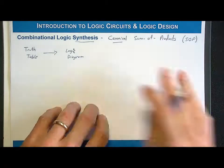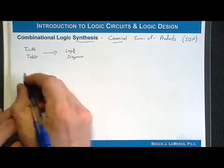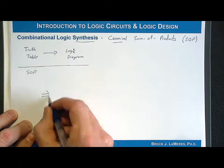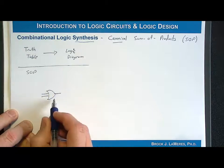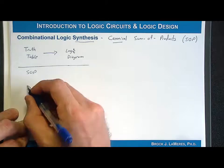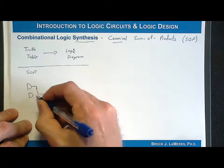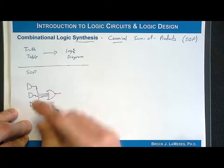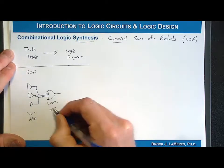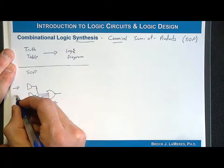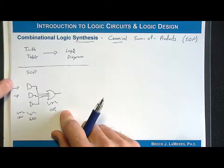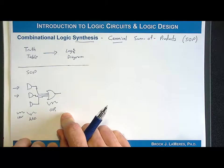We're just simply going to synthesize a canonical sum of products logic diagram. A sum of products is where you have a sum term, which is an OR gate, and it is fed by one or more product terms, and product terms are AND gates. The sum of products topology always has a stage of AND gates and then a single OR gate, and the input variables may or may not have inverters on them. This is a very common topology in logic circuits.